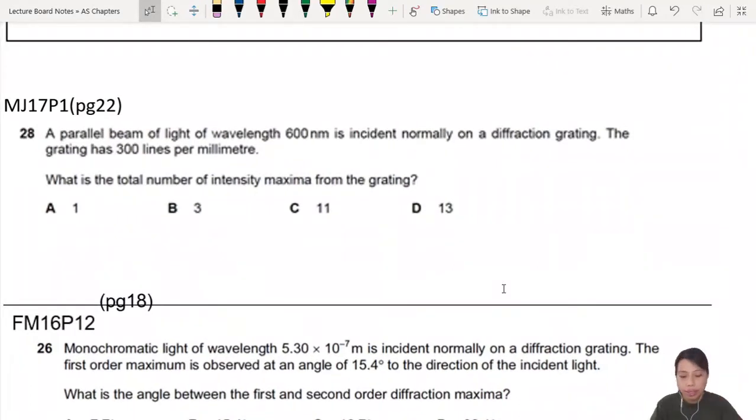A parallel light beam is incident on a diffraction grating. The grating has 300 lines per millimeter. What is the total number of maxima from the grating? You need to think about this: when you're shining a light